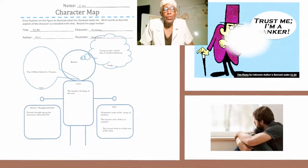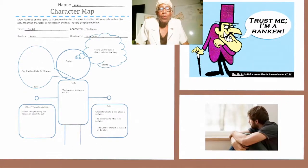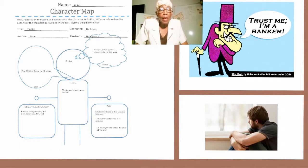Good afternoon, students. We are going to do a guided practice today, and what we will be working on is a character map. As you will see here, each person has been given a copy of the map, and it shows you how to fill it out with the title of the story — which is 'The Bet' — and then the character.